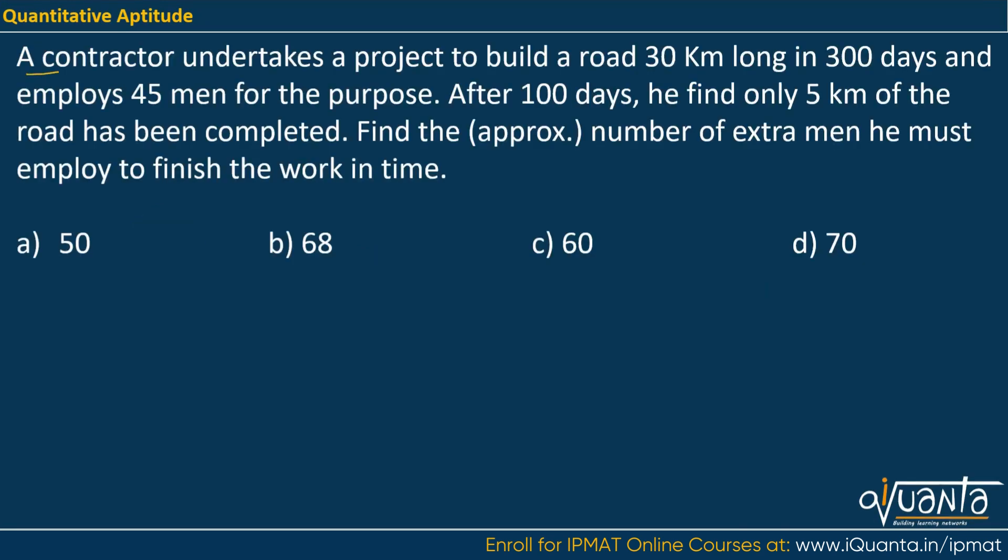So the question is a contractor undertakes a project to build a road 30 kilometers long in 300 days and employs 45 men for the purpose. After 100 days, he finds only 5 kilometers of the road has been completed. Find the approximate number of extra men he must employ to finish the work in time.